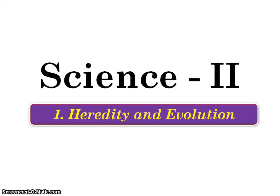Hi students, last lecture we studied about the evidences of evolution. In total, 4 evidences were covered: the first was morphological evidence, second was anatomical evidence, third was related to the vestigial organ, and the fourth was paleontological evidence. Now in the next point we will study the fifth evidence of evolution, which is the connecting link.